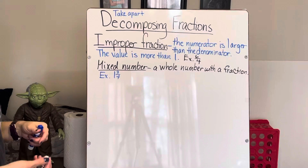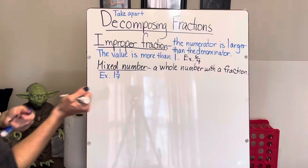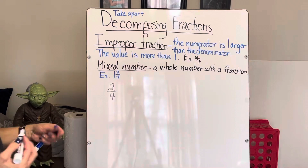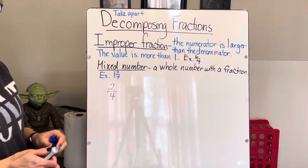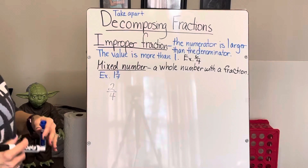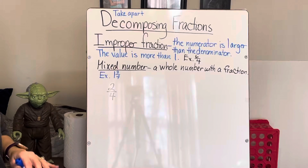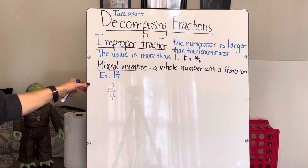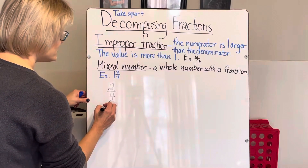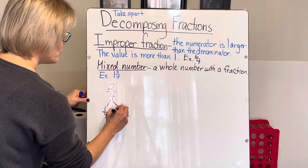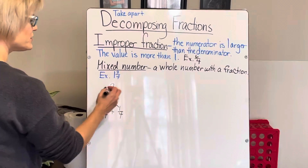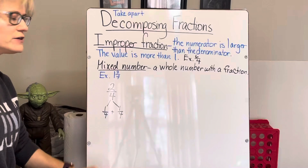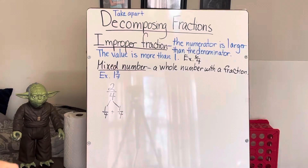So, decomposing fractions: let's say we have two-fourths. How can I break that apart? You remember we broke apart numbers in expanded form. This is kind of the same concept. If we break two-fourths down, we could break it into one-fourth and one-fourth, because one-fourth plus one-fourth gives us two-fourths. That's decomposing — taking apart two-fourths.